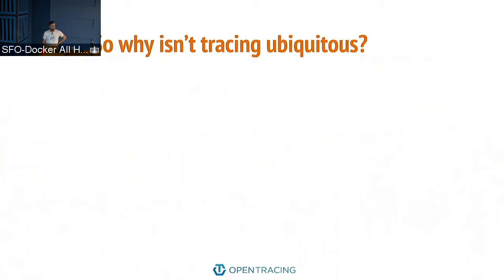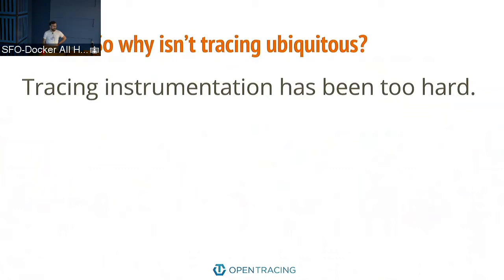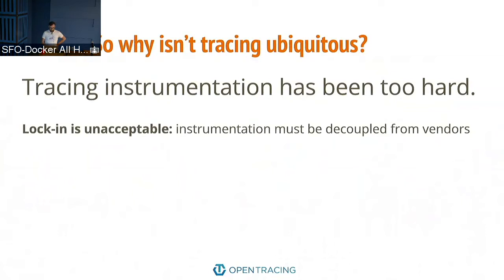Of course, people are aware of Zipkin and maybe OpenTracing, but what's the problem? The problem is that instrumentation is too hard. The reason why instrumentation has been difficult is that vendors who make money typically want to lock you into their metrics or instrumentation library. And any sensible person maintaining a third-party open source project doesn't want to lock all their users into a vendor. So that's been a problem.